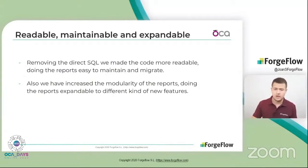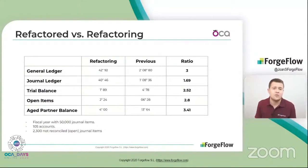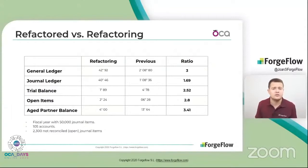As a result of the refactoring, we have managed to make the reports up to three times faster. The following table shows a comparison of calculation times before and after the refactoring. The speed has increased for all of them. It was tested with a fiscal year with 50,000 journal items in 105 different accounts, including 2,300 unreconciled open journal items. The time before refactoring was two minutes and eight seconds for the general ledger and one minute and eight seconds for the journal ledger. Now it's reduced to 40 seconds for both.